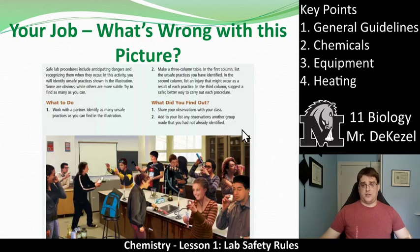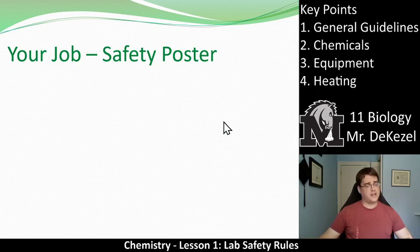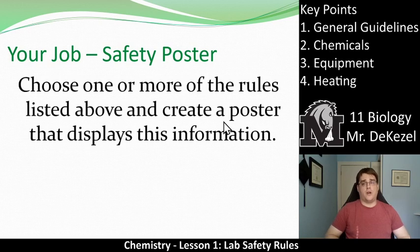There are two activities for you to do. First, look at the picture in your notes — there are a whole bunch of unsafe lab procedures going on. I'd like you to identify the unsafe lab procedures; there are at least 15. Write them all out and we can add them to a combined class list. Second, create a safety poster: choose one or more of the approximately 30 rules listed and create a poster displaying that information. We'll use these to inform others about the rules we follow in the lab. If you have any questions, please let me know. Thanks very much everyone.